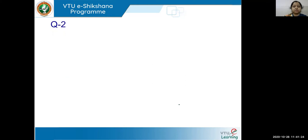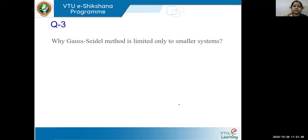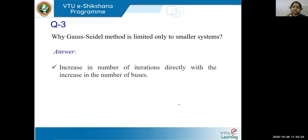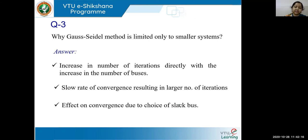Question two: In the Gauss-Seidel method of power flow, the nature of convergence is linear — as you increase the number of buses it is proportional to time and other factors. Question three: Why is the Gauss-Seidel method limited only to smaller systems? Because as the number of buses increases, the computational time per iteration also increases, the rate of convergence reduces, and the effect of the choice of slack bus also gets affected for a huge system.